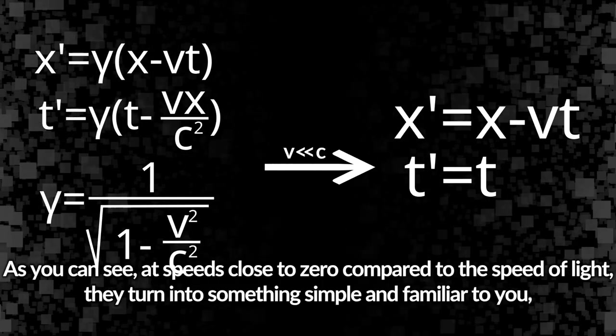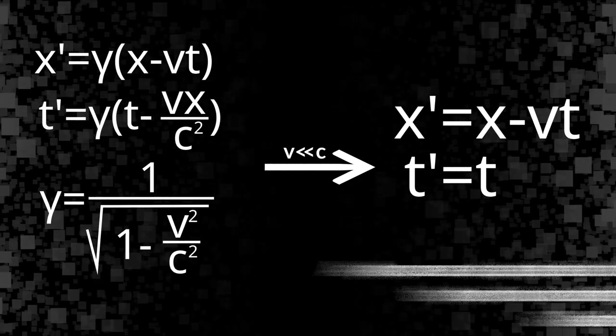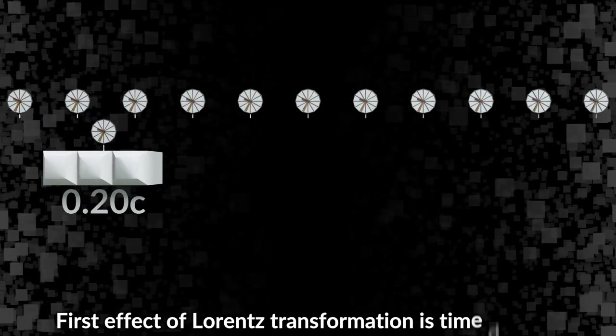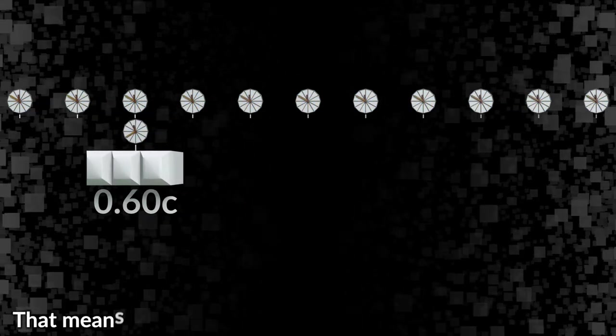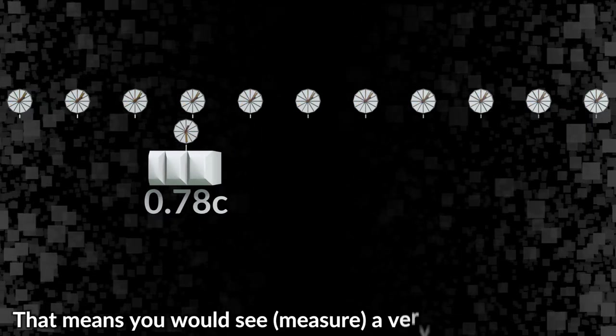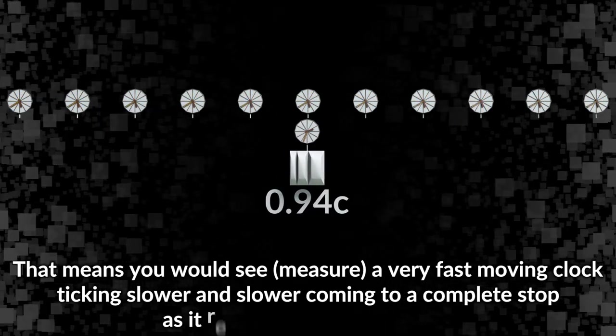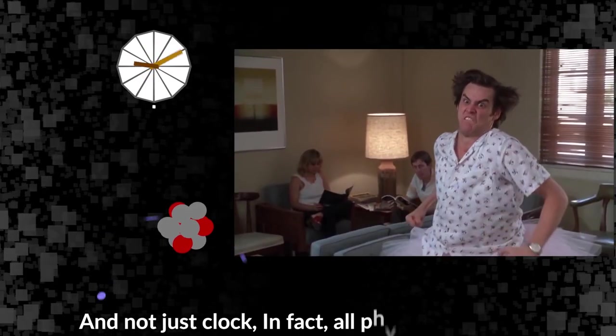However, at high speeds it produces several noticeable distortion effects. First effect of Lorentz transformation is time dilation. That means you would see, measure, a very fast moving clock ticking slower and slower, coming to a complete stop as it reaches the speed of light.